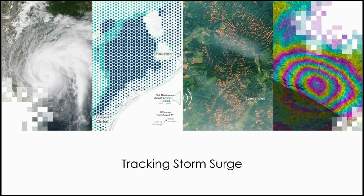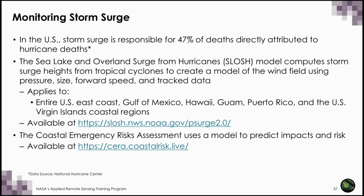Storm surge is responsible for 47% of deaths directly attributed to hurricanes. There is a portal called the Sea, Lake, and Overland Search from Hurricanes model — SLOSH — which computes storm surge heights from tropical cyclones by creating a model of the wind field using pressure, size, forward speed, and track data. This portal is only applicable to the US east coast, the Gulf of Mexico, Hawaii, Guam, Puerto Rico, and the US Virgin Islands in the Caribbean.